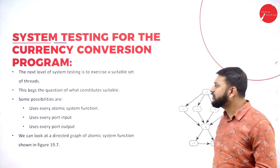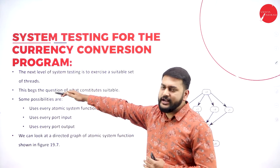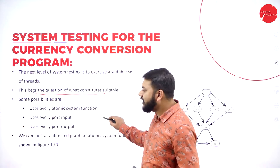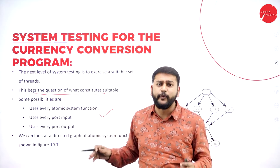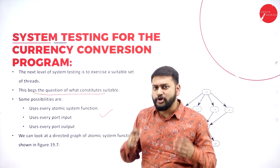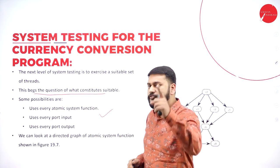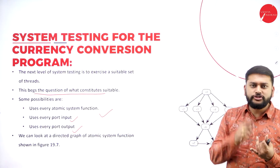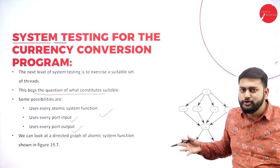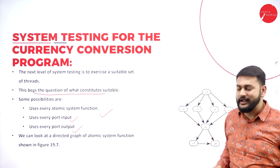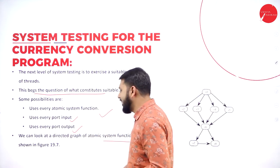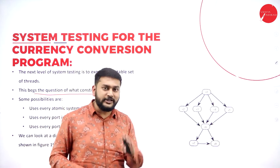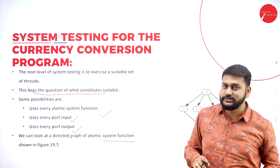Moving forward, when it comes to threats, the question is: what constitutes a suitable thread? You must use every atomic system function — that is the most important point. You must also use every port input and every port output, leaving nothing out. I will also be mainly dependent on directed graphs with respect to the ASF, which depicts sequences s1 through s8 showing how exactly the system is working.